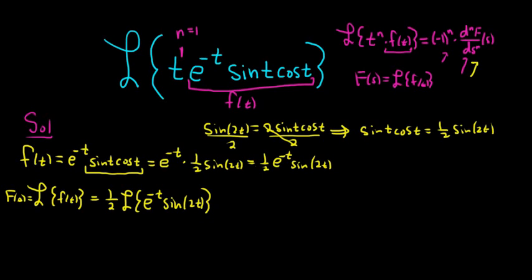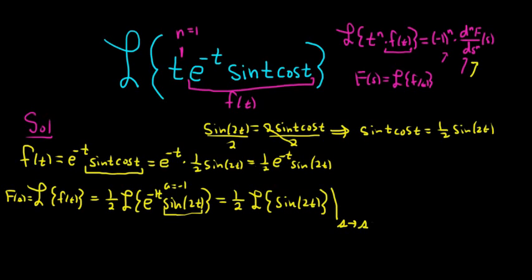Whenever you have an exponential in front of something you can take the Laplace of, you can use the first translation theorem, also called the shifting theorem. This gives us the Laplace of sine 2t with a shift from s to s minus a. In this case a is negative 1, so s minus negative 1 becomes s plus 1. For example, if you had e to the 3t sine t, you'd drop the e, get sine t, and the shift would be from s to s minus 3.